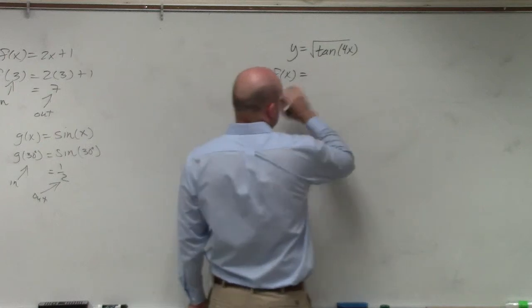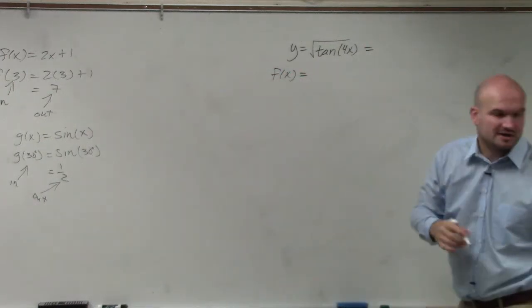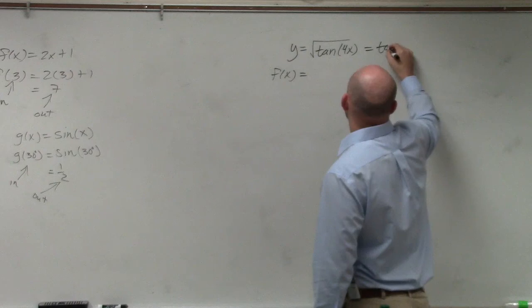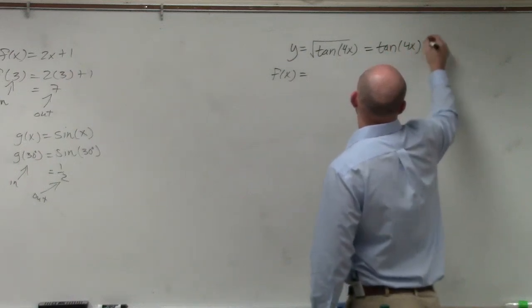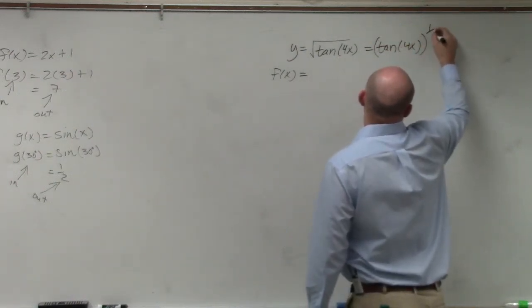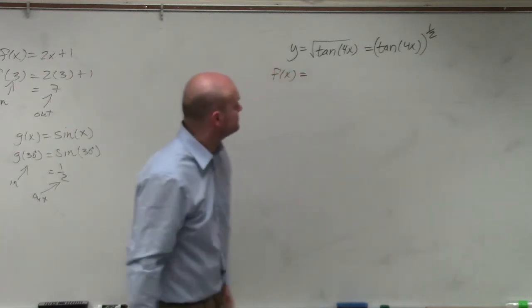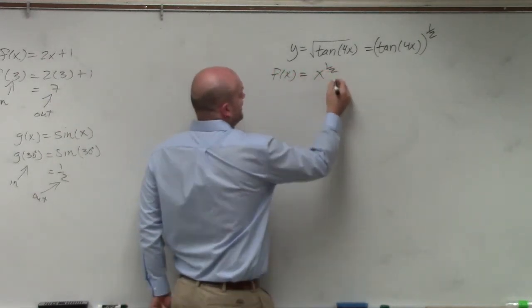f of x is, and again, whenever you guys see a radical, let's just look at this as tan of 4x raised to the 1 half. So I can say f of x is going to be x to the 1 half.